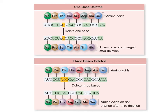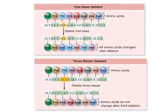Now let's look at what happens when you insert or delete a base. In this example, a C is deleted from the sequence. The original ACG codon now only has AG, so it must borrow from the next codon to complete a triplet, and every codon after that is shifted as well. All the amino acids from that point on will be different from the original. However, the amino acids before the frameshift remain the same.